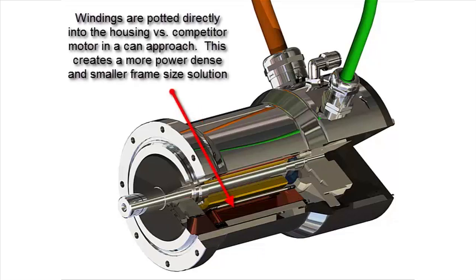MPW motors are potted directly into their 300 series stainless housings. This creates a motor with high power density versus competitor motors that simply insert an aluminum house motor into a stainless can. The result is that the MPW can achieve the same application requirements with a motor that is often one frame size smaller than those offered by other manufacturers.